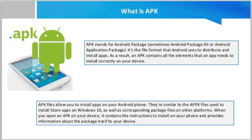It's easy to obtain an APK file from elsewhere, move it to your device, and then install it manually. APK files are saved in a compressed ZIP format and can be opened by any ZIP tool. If you'd like to explore the content of an APK file, you can rename the file extension to .zip and open the file.